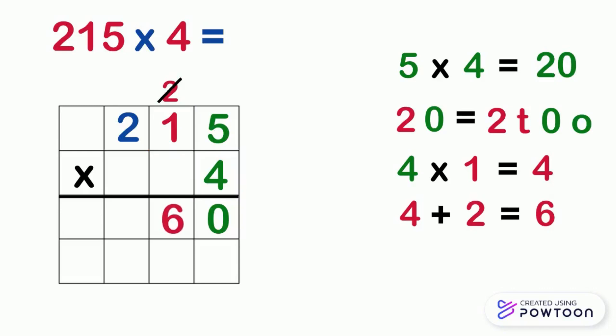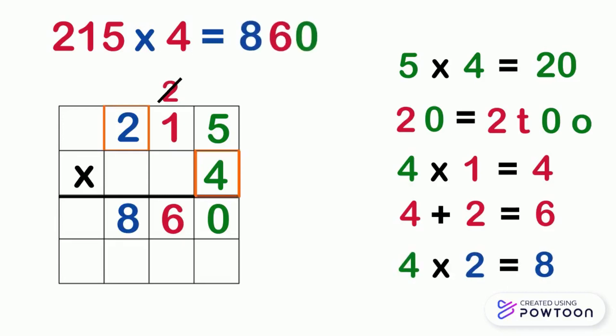Finally, we will move to the 100's place column. We will multiply 4 by the 100's digit, which is 2. 4 times 2 equals 8. Then we will write 8 in the 100's place column in the answer box. So 215 times 4 equals 860.